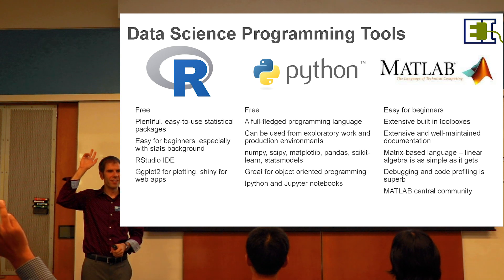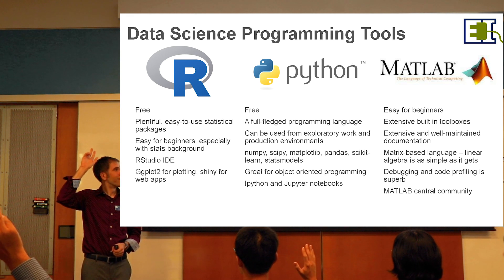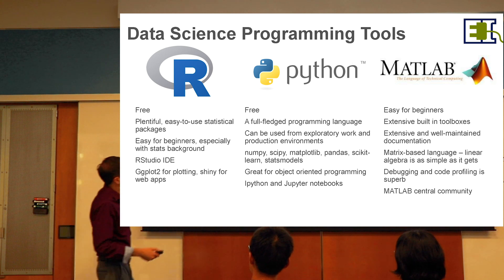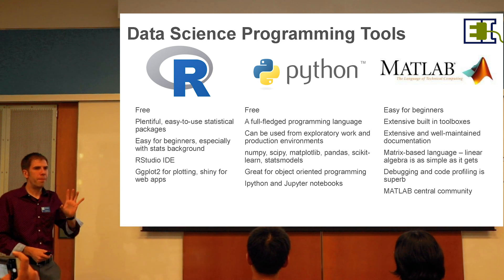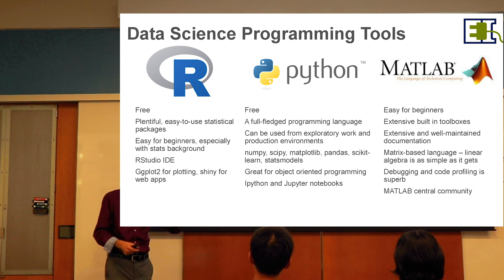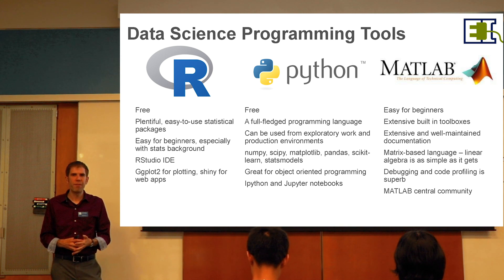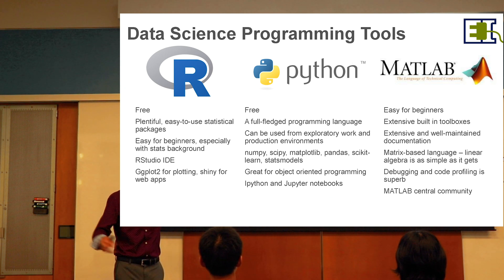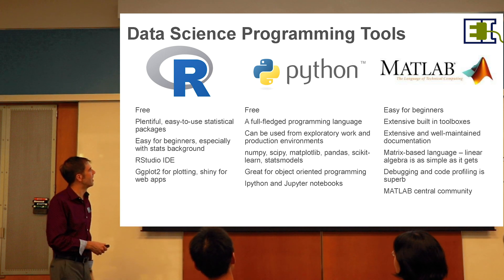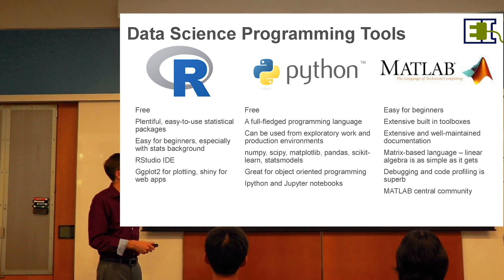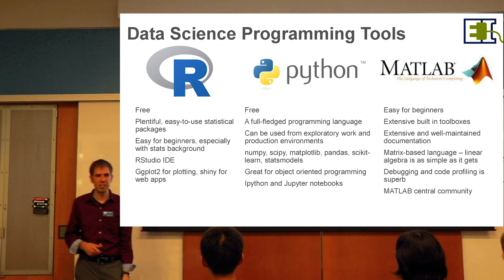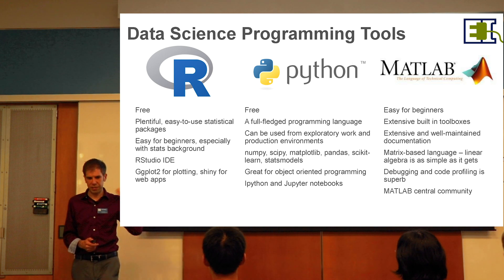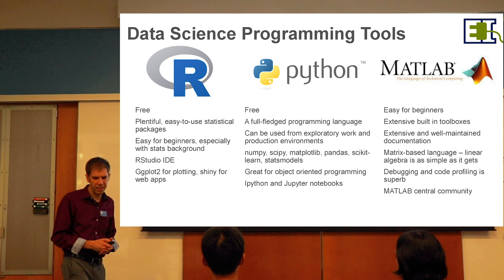How many R users do we have here? Python? MatLab? An even distribution — that is indeed rare in a group. Each of these has pros and cons, depending on your field-specific needs and where different packages are for the work you're doing. The nice thing about R and Python is they're free. The nice thing about MatLab is all the packages just work together. Python has certainly seen significant increases in uptake in the machine learning community and is probably the most prominent of the three these days, though all have significant representation across different disciplines.